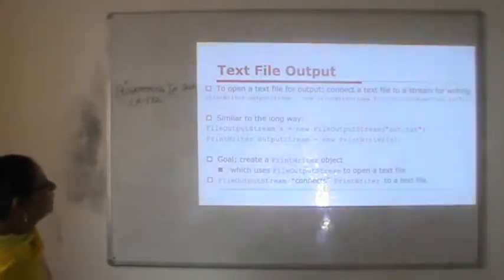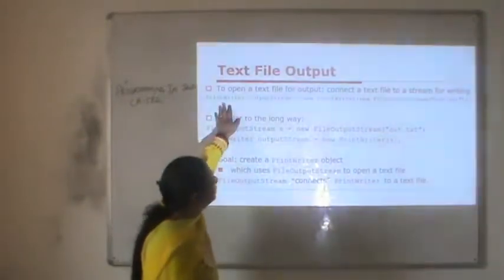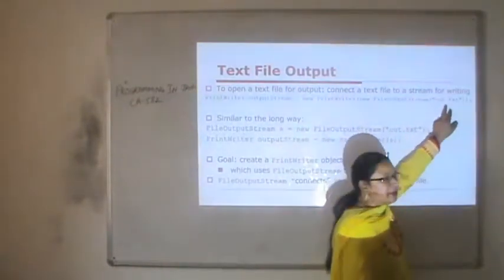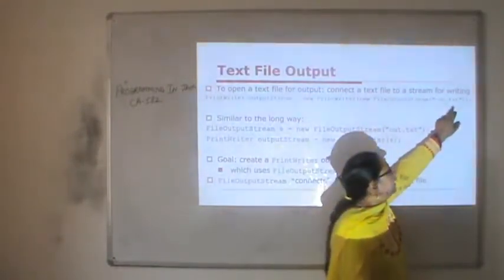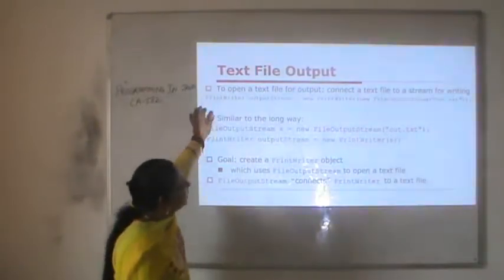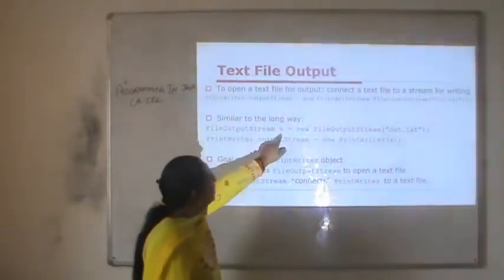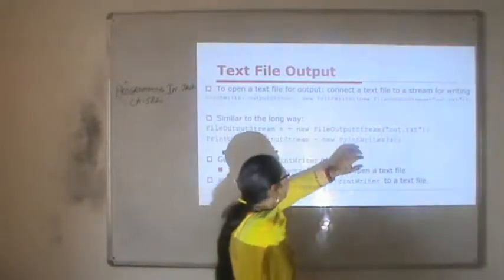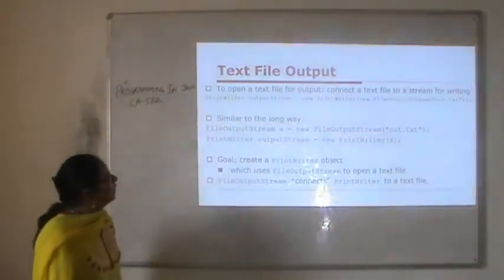Text file output — to open a text file for output, connect a text file to a stream for writing. We need a PrintWriter class instance, and in its constructor we pass an instance of FileOutputStream. In FileOutputStream we pass the name of the file with extension — for example, out.txt, where 'out' is the name and 'txt' is the extension. We can also write this in two steps: first create an instance of FileOutputStream, then pass it to the PrintWriter constructor. The goal is to create a PrintWriter object which uses FileOutputStream to open a text file named out.txt.